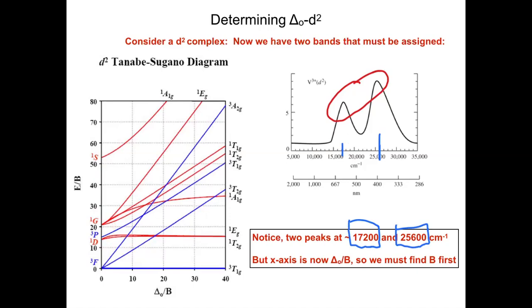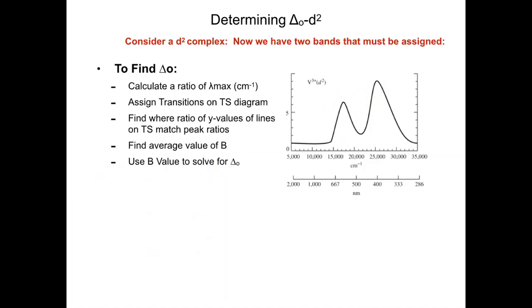Using those in conjunction with our Tanabe-Sugano diagram, we're going to be able to find out what delta octahedral is. Here are the steps: First, find a ratio of lambda max of these two peaks. Divide the wavenumbers of these two peaks to find a ratio. Assign these electronic transitions on our Tanabe-Sugano diagram. Then find where that initial ratio of peaks is based on the y values of lines on our Tanabe-Sugano diagram. Use those to find out what B is and calculate an average value of our Racah parameter. Then once we know that, we can go ahead and calculate delta octahedral.